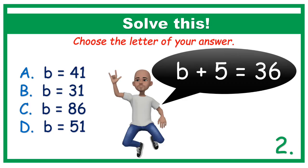Number 2. B plus 5 equals 36. For A, B equals 41. For B, B equals 31. For C, B equals 86. And for D, B equals 51. Choose the letter of your answer.